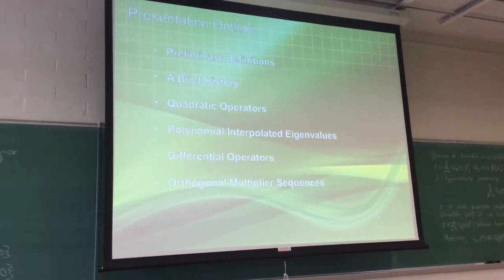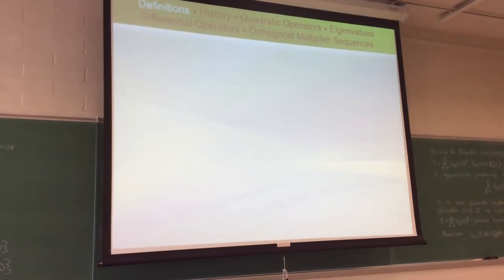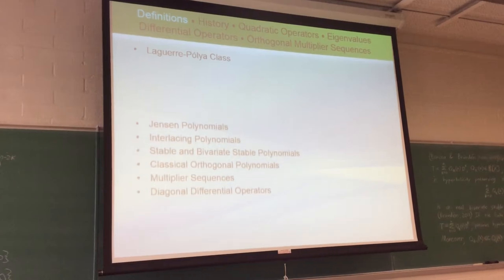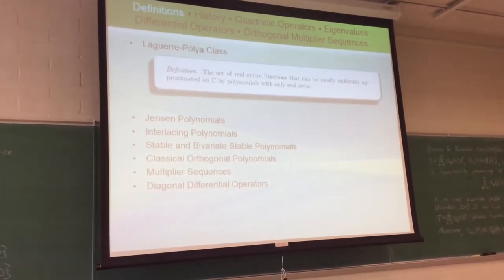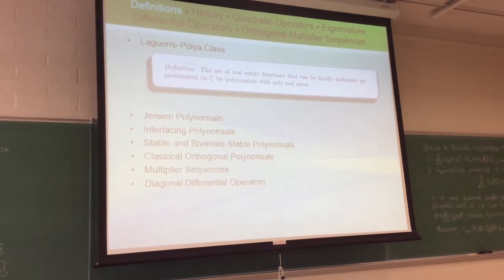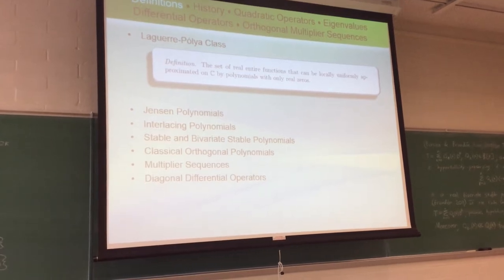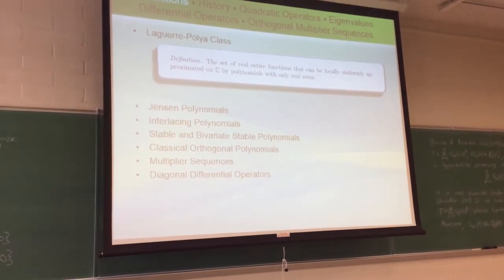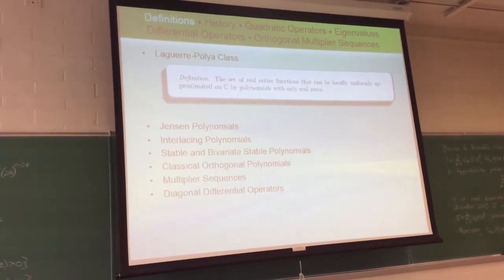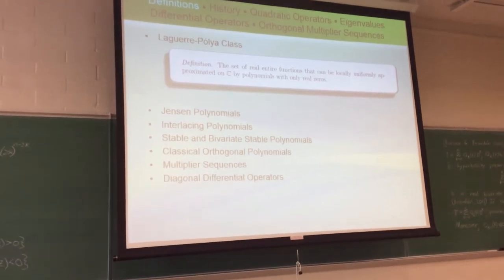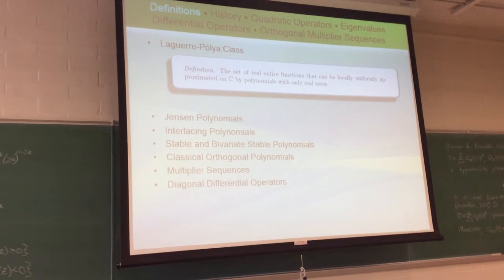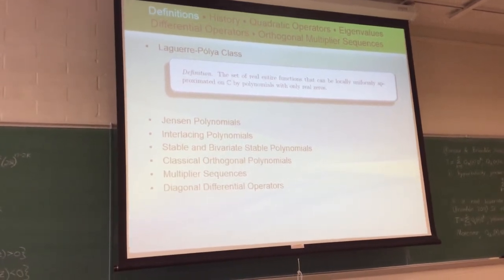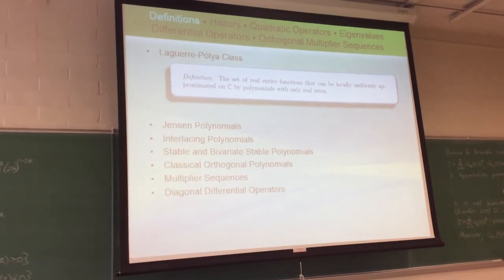Some preliminary definitions. The first and foremost is the Laguerre-Pólya class — the set of entire functions that can be locally uniformly approximated on ℂ by polynomials with only real zeros. That's really the theme of the entire dissertation: talking about polynomials that have only real zeros and characterizing all entire functions that can be approximated by them. In fact, the Riemann hypothesis itself can be stated in terms of a particular function that may or may not be in the Laguerre-Pólya class.